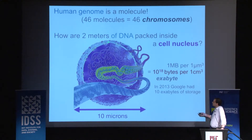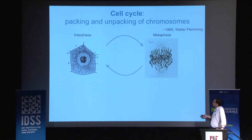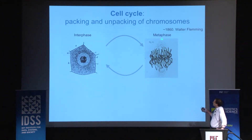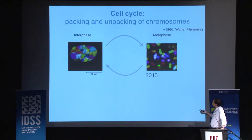Not only is DNA packed densely, but the mystery is that DNA is packed inside nuclei in such a way that it can be read and repackaged — so DNA is totally accessible. During the cell cycle there are two stages: interphase, where DNA is unpacked, and metaphase, where chromosomes are compacted. These are drawings from the first drawings of chromosomes from the 1860s by Walter Fleming. These days, high-resolution microscopy lets you paint individual chromosomes in different colors.